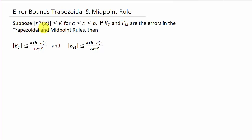Suppose the absolute value of the second derivative is less than or equal to K when x is between a and b. If the error of the midpoint rule is e sub m, then the absolute value of e sub m is less than or equal to K times (b minus a) cubed over 24n squared.